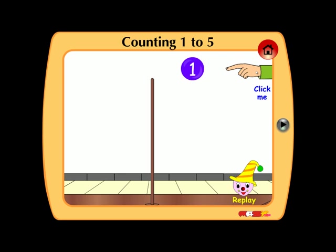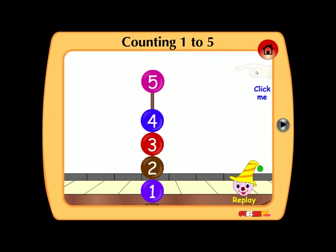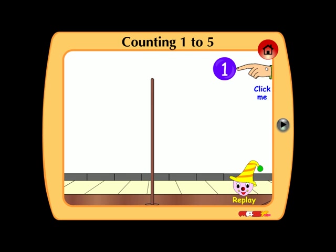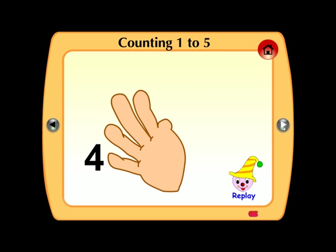Click 1, 2, 3, 4, 5. Now again: 1, 2, 3, 4, 5.